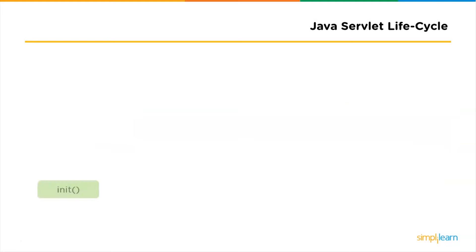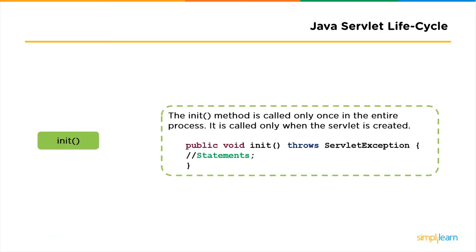The first stage is the init process. The init method is called only once — it is called only when the servlet is created and not for all the requests afterwards. So it is used for one-time initializations, just as with the init method of applets. The servlet is normally created when a user first invokes a URL corresponding to the servlet, but you can also specify the servlet to be loaded when the server first starts. When a user invokes a servlet, a single instance of each servlet gets created, with each user request resulting in a new thread handed to do-get or do-post as appropriate. The init method simply creates or loads some data that will be used throughout the lifecycle of a servlet.